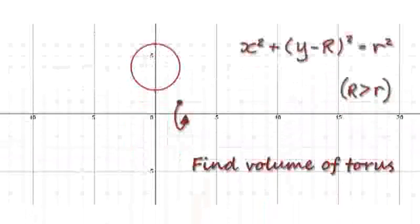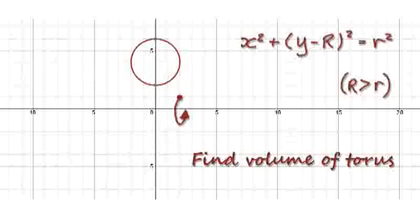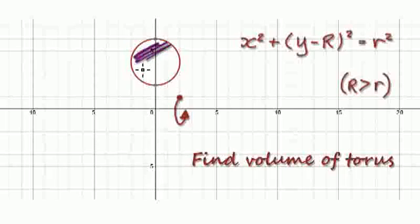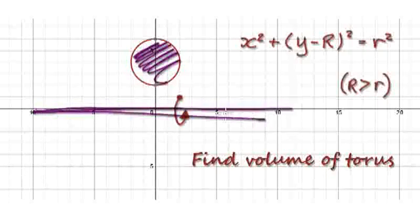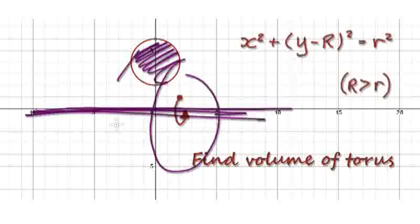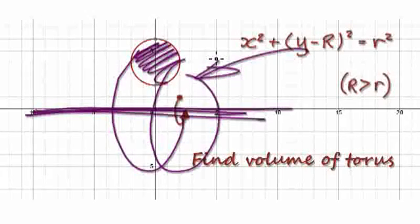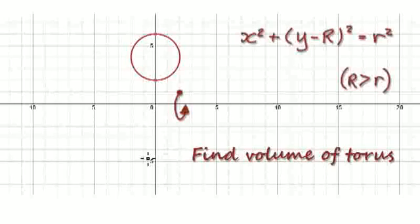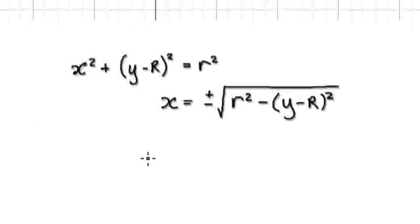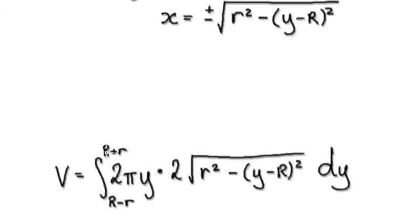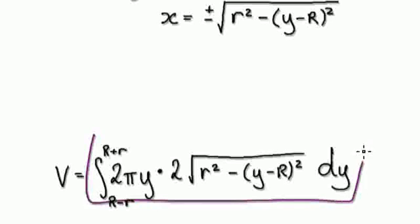Following on from the previous two videos, we were trying to work out the volume of the torus. So we had a circle, and we're going to rotate it 360 degrees along the x-axis — that would then trace out a 3D solid. We were trying to work out the volume of that 3D solid, and the volume would be given by this expression.